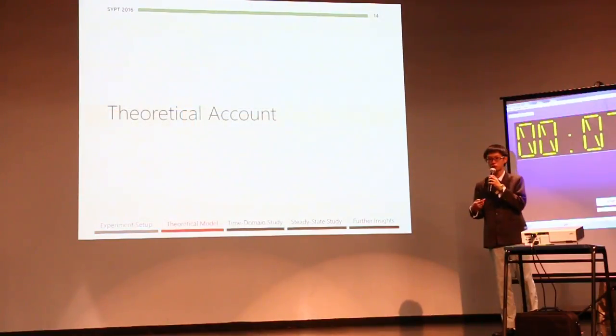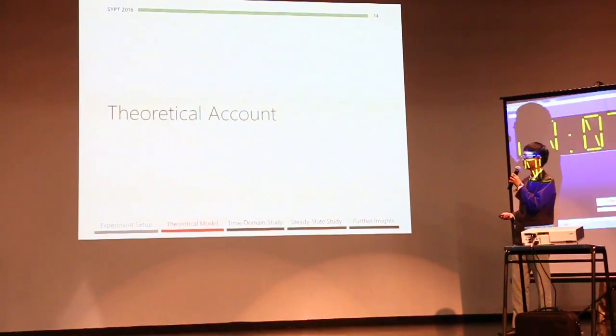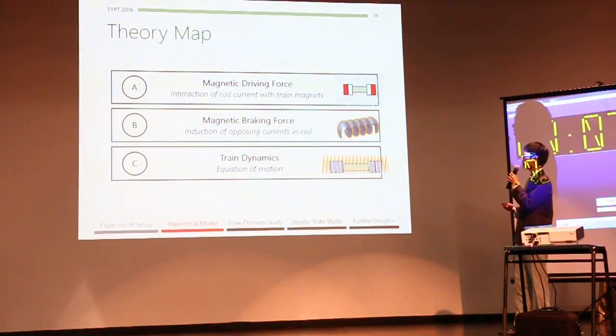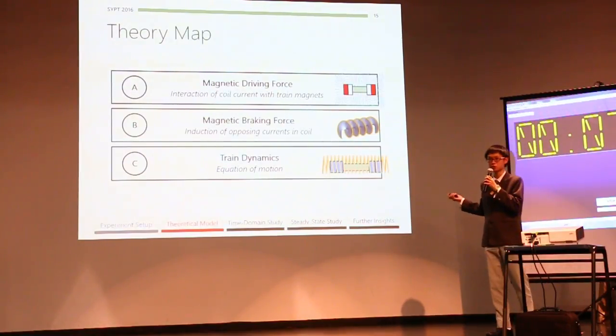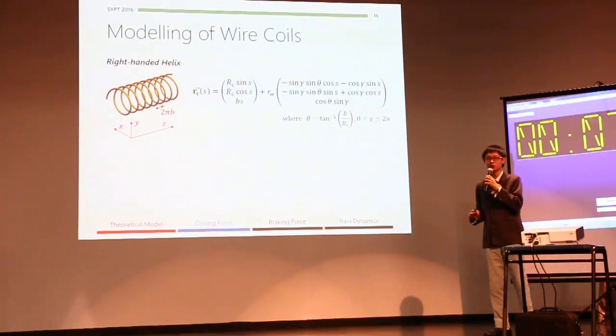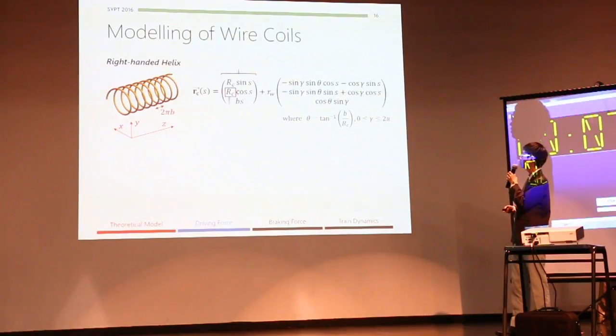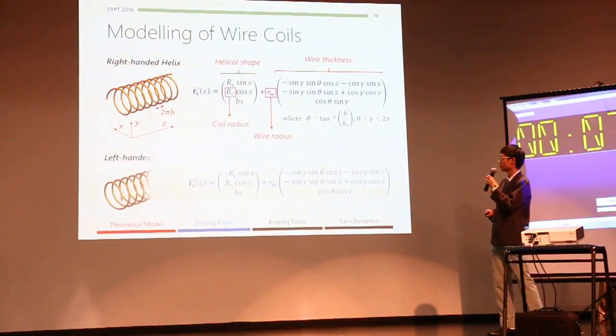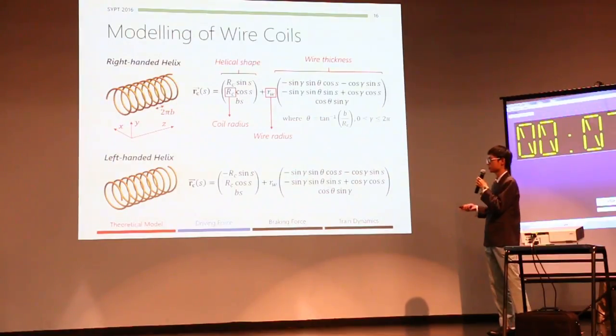So moving on, I want to move on to a theoretical account of this phenomenon. I will first go through the origin of a magnetic driving force, and then the braking force, and finally combine these forces into the overall dynamics of our train. So firstly, we will seek to model our wire coils. We can use the standard helix equations, and we add a second turn behind to account for the finite thickness of our wire. We can write the recursion for left-handed helix similarly.